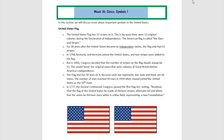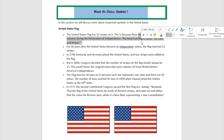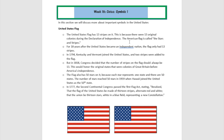The United States flag has 13 stripes on it, and this is because there were 13 original colonies during the Declaration of Independence. So the very first time that independence was declared in 1776, there were 13 colonies, and for 18 years after the United States became an independent nation, the flag only had 13 stripes.